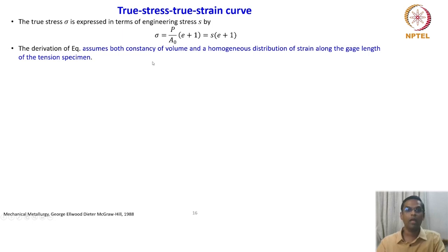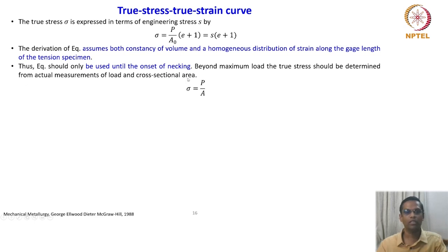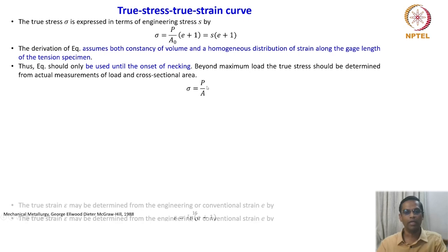Homogeneous distribution of strain occurs only up to maximum load on the stress-strain curve. Therefore, this equation should be used only until the onset of necking. Once necking starts, the strain distribution is no longer homogeneous, and these relationships no longer hold. Beyond maximum load, the true stress must be determined from actual measurements of load and cross-sectional area: sigma = P divided by A.